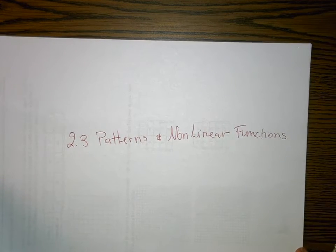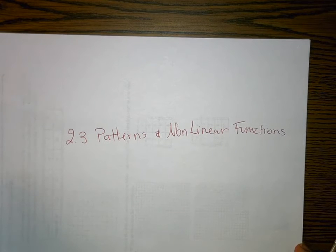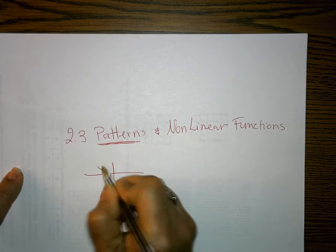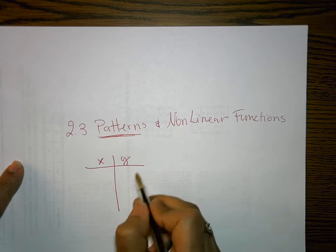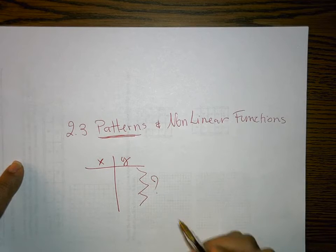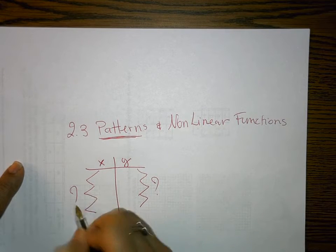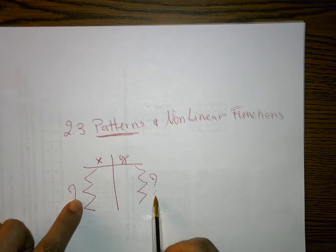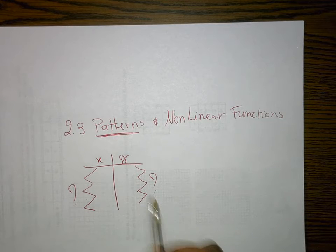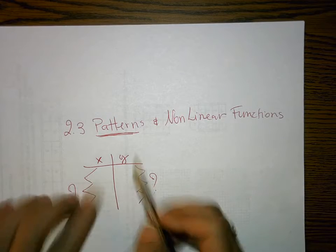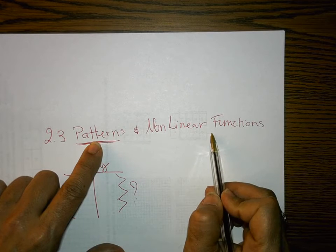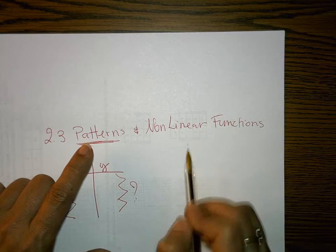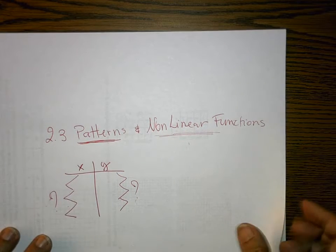Alright, so here is 2.3 Patterns and Nonlinear Functions. We are looking for patterns — we always want to look at the pattern on the x-values and on the y-values. We want to see what is happening on both sides every single time. Now we are going to look at patterns of nonlinear functions, and it will be mixed — some will be linear and some will not be linear.